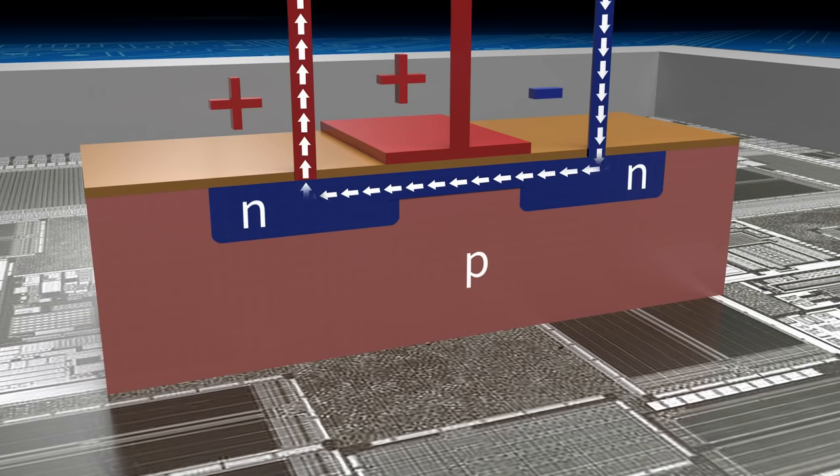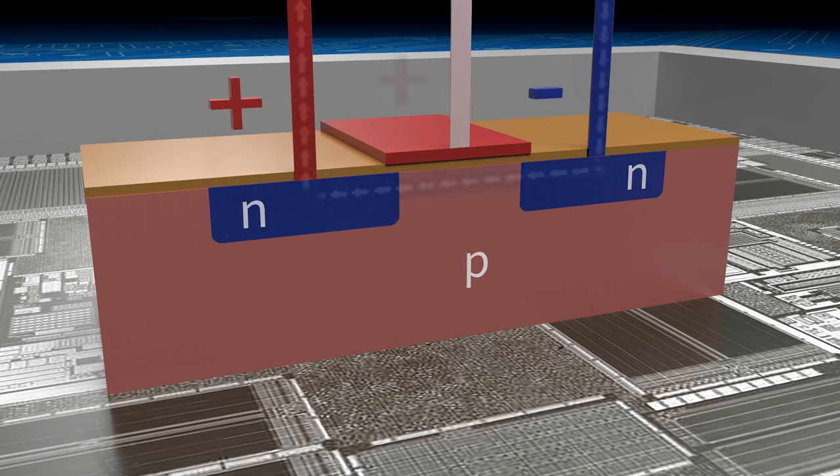In this way, the transistor can be switched back and forth between current enable and disable, between 0 and 1, on and off.